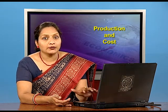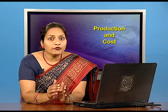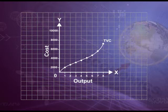We can show it through a table with two columns: units of output and total variable cost. Units of output are 0 through 7, and the respective total variable cost is 0 at zero units and 2000 at the first unit of output. We can see that total variable cost is increasing as we increase the units of output. If we draw a curve using this table, we get the total variable cost curve, which rises upward showing that as output increases, total variable cost also increases.